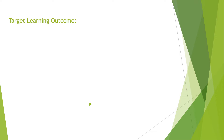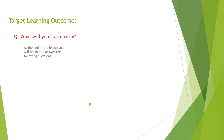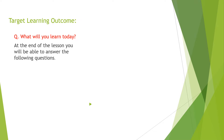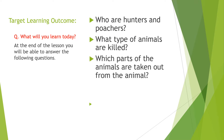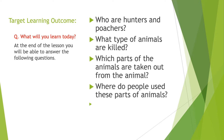What will you learn today? At the end of the lesson, you will be able to answer the following questions. The first question is: who are hunters and poachers? Second: what type of animals are killed? Third: which parts of the animals are taken out? And the last one: where do people use these parts of animals?